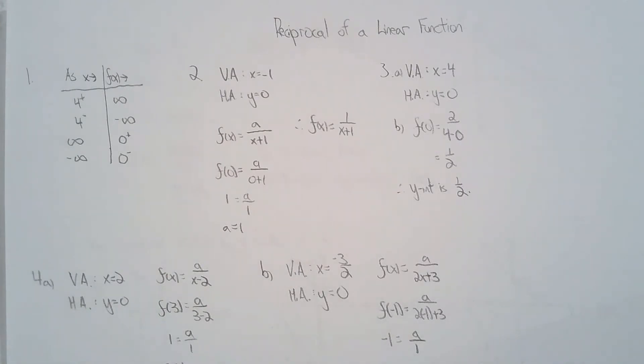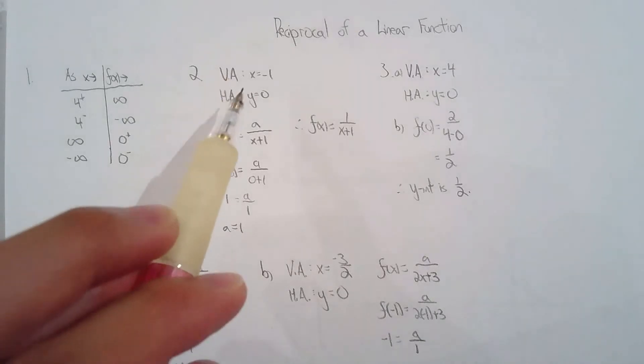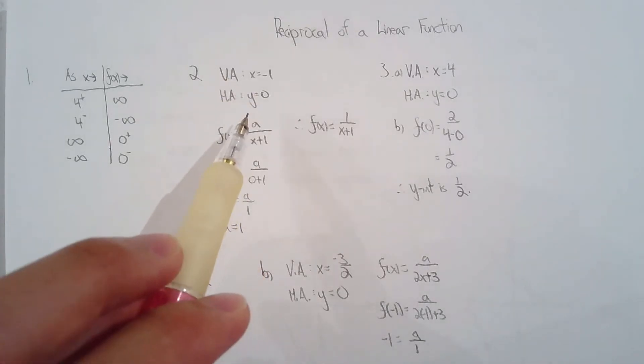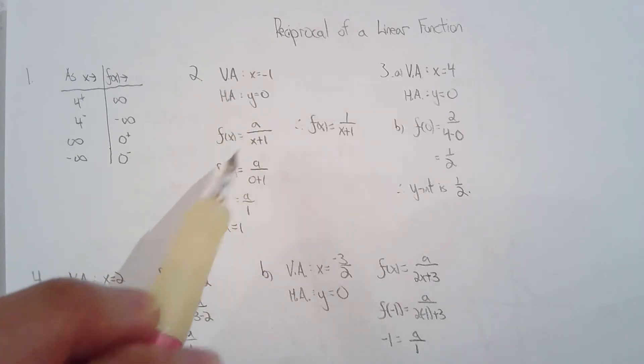For number two, they want us to take a look at the graph and then determine the asymptotes. So you can see that the vertical asymptote is x equals negative one and the horizontal asymptote is y equals zero, and they also actually want us to build an equation.